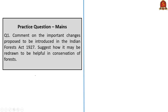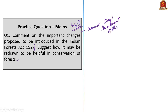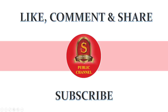One question based on GS Paper 2 of the mains syllabus: 'Comment on the important changes proposed in the Indian Forest Act of 1927. Suggest how it may be redrawn to help in conservation of forests.' For the first part, comment on proposed changes such as immunity for forest officials to use firearms, increased overreach of forest officials, penalizing the entire community for one person's offense, and power of officials to cancel rights of forest dwellers and relocate them. For the second part, highlight the points discussed in today's editorial analysis. Don't forget to like, comment, share, and subscribe to the Shankara ACE Academy YouTube channel for more updates on UPSC civil service examination preparation.